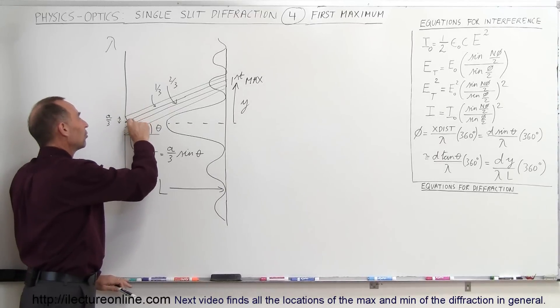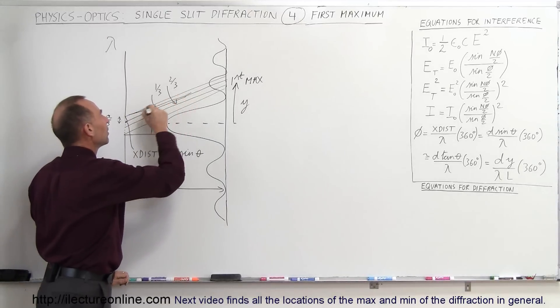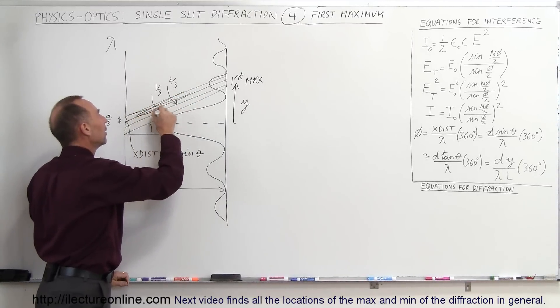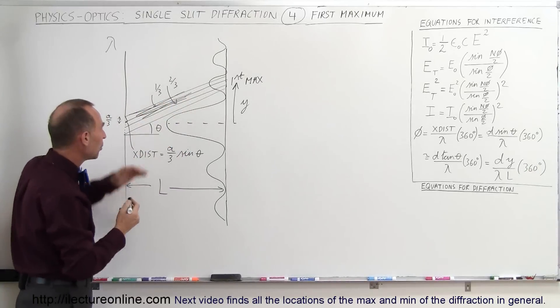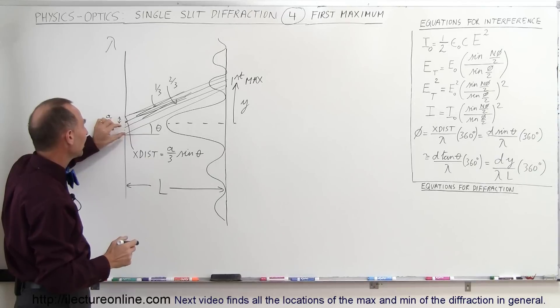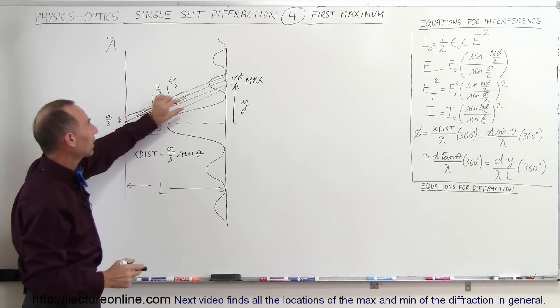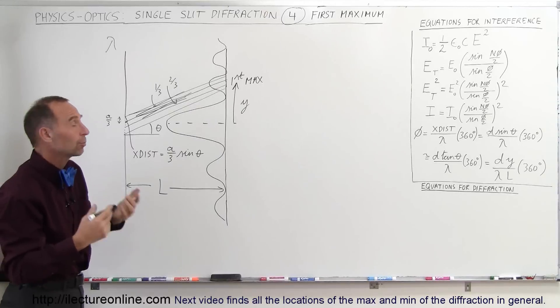The ray right below that will cancel out this ray, the ray right below that one will cancel out this ray in such a way that the entire first one-third of the beam will cancel out the entire second third of the beam, so that they both will destructively interfere with each other in such a way that only the very last one-third of the beam will actually make it through and put a bright spot on the screen right there which becomes the first maximum.